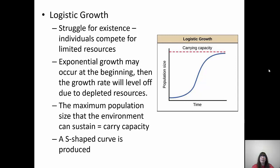Logistic growth is a sigmoid or S-shaped curve. Resources are limited, so there's competition. Exponential growth initially occurs, but the growth rate levels off because as more individuals are added, resources are depleted. There's a carrying capacity — that red dotted line — which is the maximum population a particular habitat can sustain. Once the population hits the carrying capacity, it levels off because there aren't enough resources to support any more individuals.